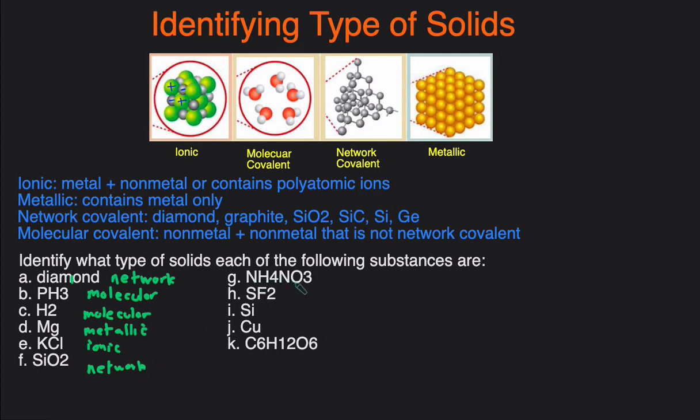Next one, NH4NO3, ammonium nitrate. Ammonium is a polyatomic ion and nitrate is a polyatomic ion, so since we have polyatomic ions, this is going to be ionic. SF2. S is a non-metal, F is a non-metal, so two non-metals that isn't network, so then it must be molecular. Si—Si is a network covalent compound.